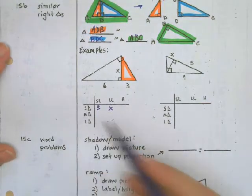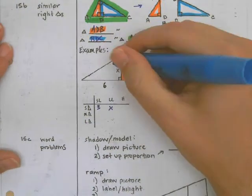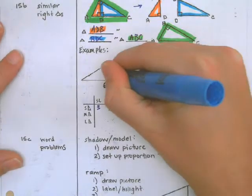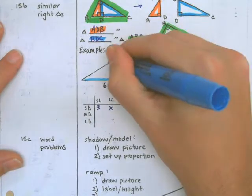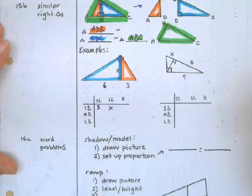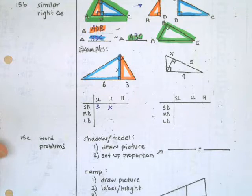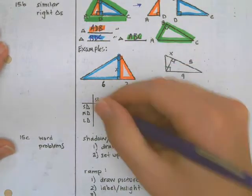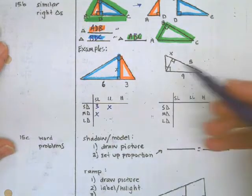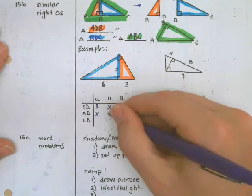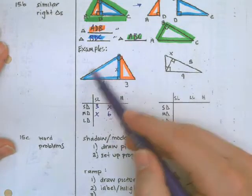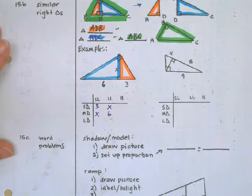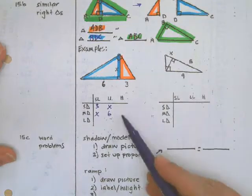Now for the medium triangle. That is going to be the blue one. So for the blue triangle SL the short leg is X. LL the long leg is six. Again we do not have a value or variable for the hypotenuse. So we're going to leave that spot blank.